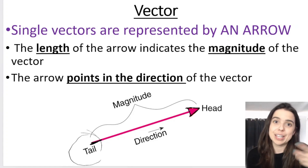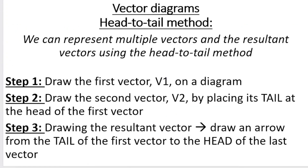Step one tells us that we draw the first vector, V1, on a diagram. For example, if we have a scenario where two people are pushing the same box at the same time, our head-to-tail diagram would look like this. Our first vector would point to the right — that is V1. Step one, done.